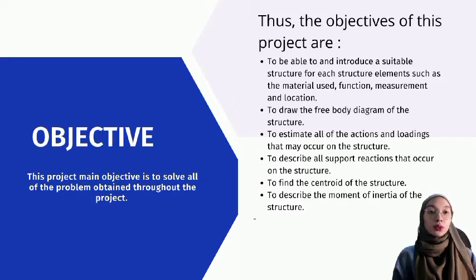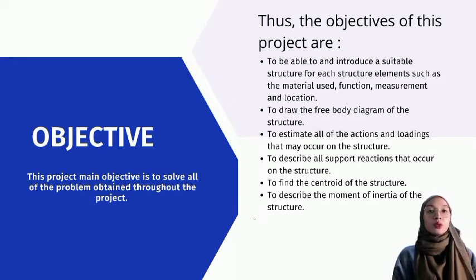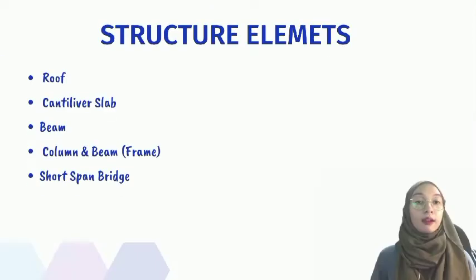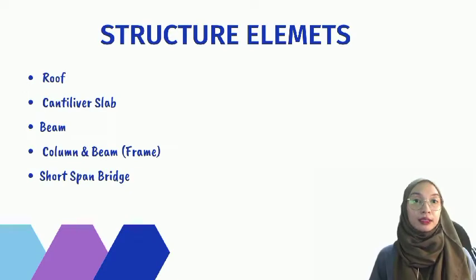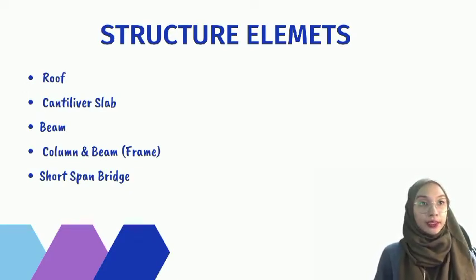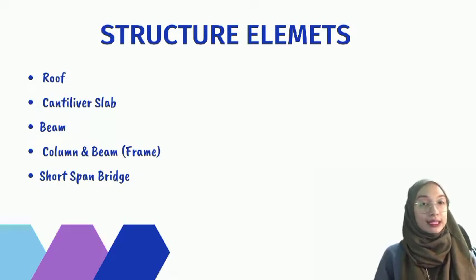Further objectives are to describe all support reactions that occur in the structure, to find the centroid, and lastly to describe the moment of inertia. There are five elements in our structure: roof, cantilever slab, beam, column, and lastly short span bridge.